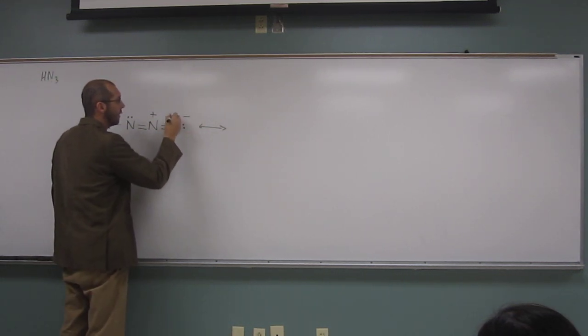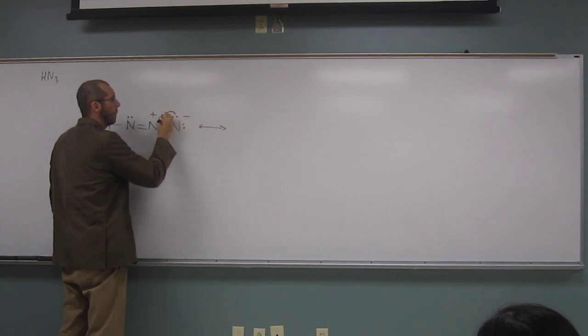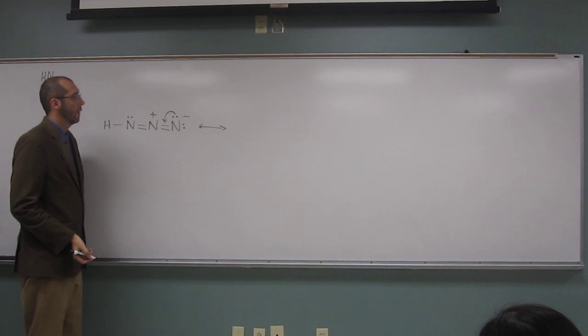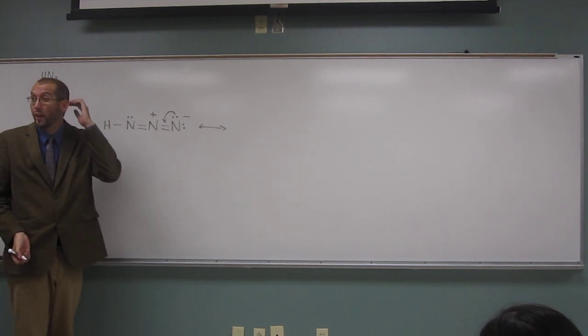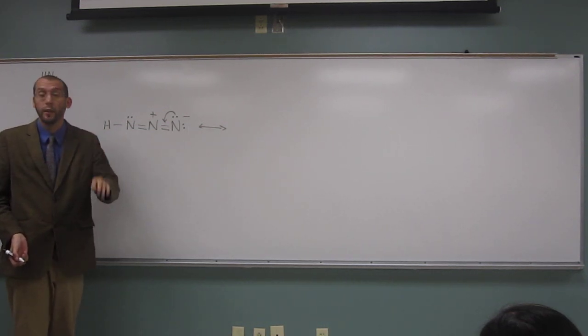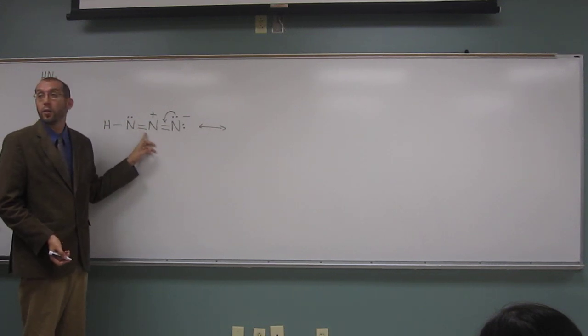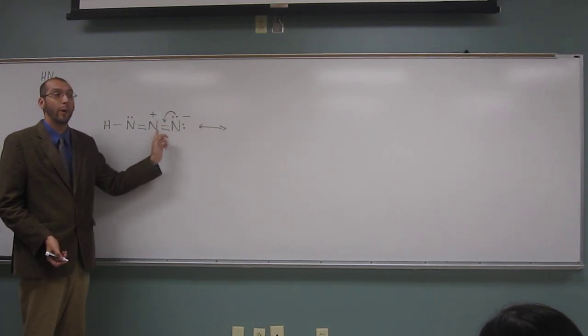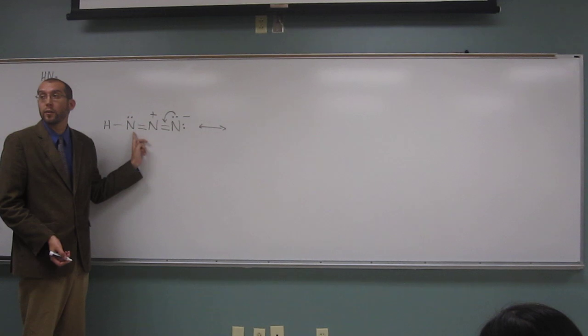So what I'll do is just take this lone pair, put it there. So the most bonds nitrogen can make is four. So already, this one's making two and two, right? So if I had a third bond there, what do I have to do to the bonds over here?